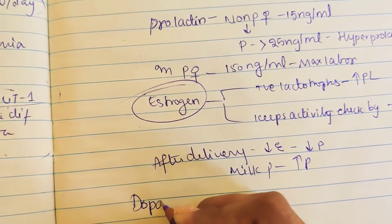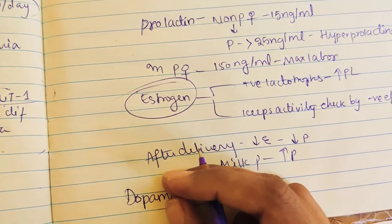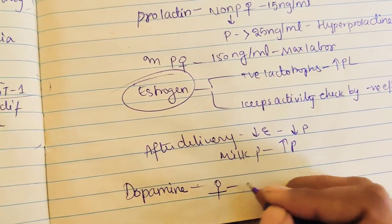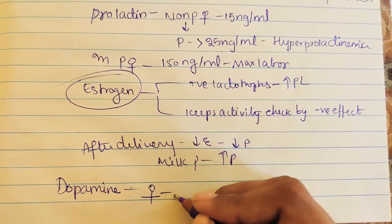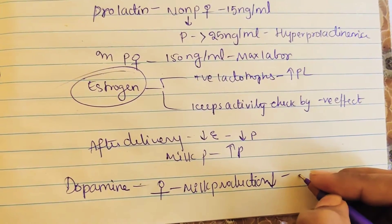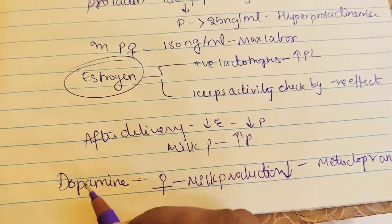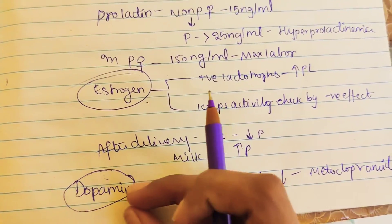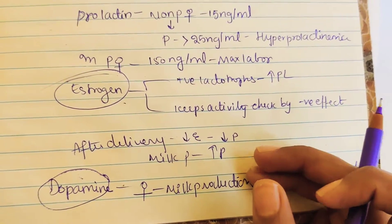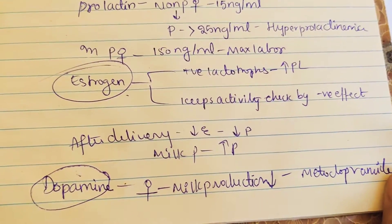Dopamine is actually a prolactin inhibiting hormone — it inhibits prolactin. For a female after delivery in whom milk production is reduced, to increase milk production we give dopamine inhibitors like metoclopramide. By inhibiting dopamine, we decrease dopamine levels, which increases prolactin and thereby increases milk production.